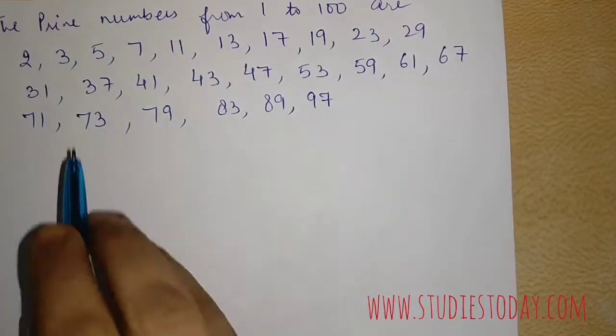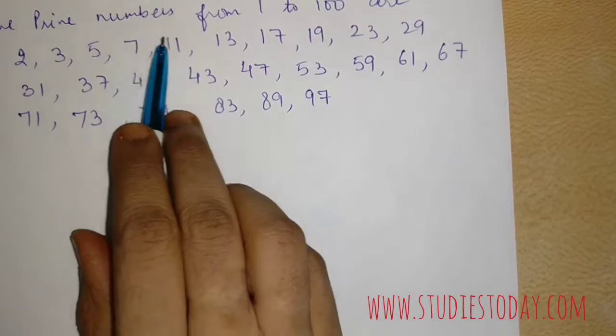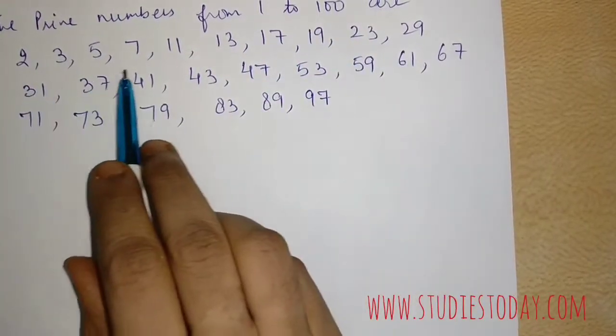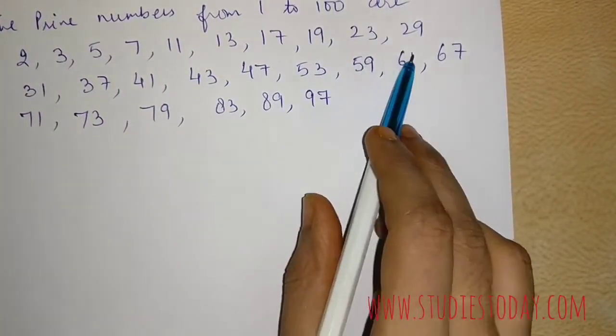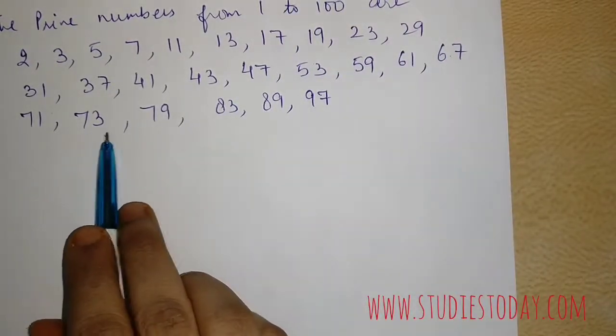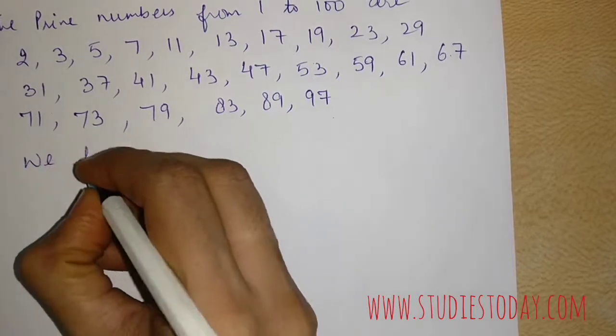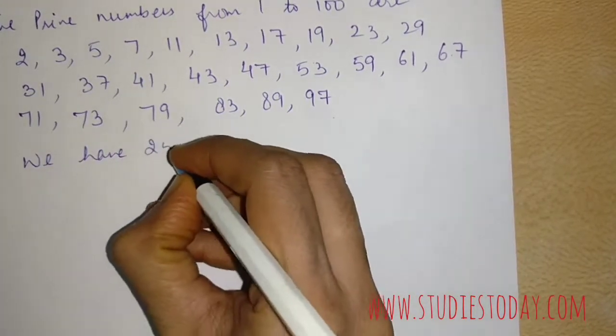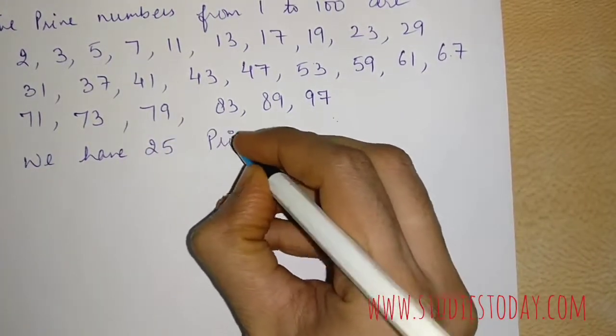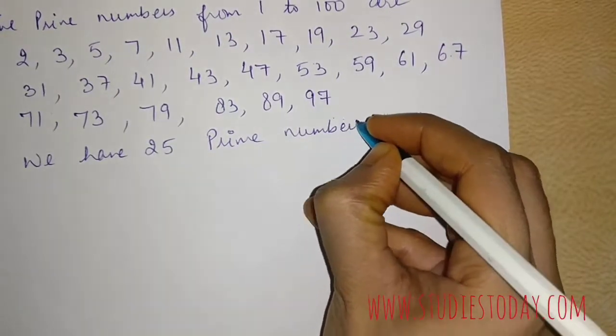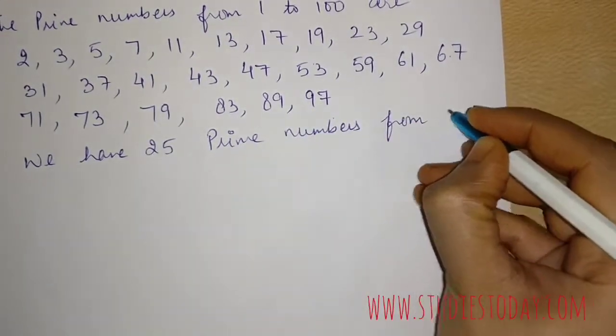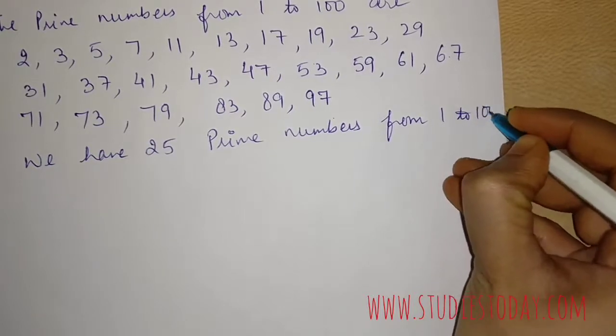Let us count that: 1, 2, 3, 4, 5, 6, 7, 8, 9, 10, 11, 12, 13, 14, 15, 16, 17, 18, 19, 20, 21, 22, 23, 24, 25. So we have 25 prime numbers from 1 to 100.